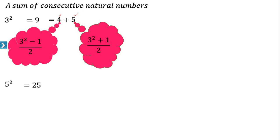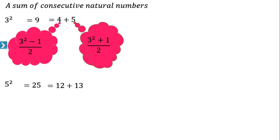Now 5² is equal to 25. How do we express 25 as the sum of two consecutive natural numbers? That is (25 − 1) / 2 and (25 + 1) / 2. So (25 + 1) / 2 is 26 / 2 = 13, and (25 − 1) / 2 is 24 / 2 = 12. So 25 is equal to 12 plus 13. Twelve is (25 − 1) / 2 and the next number is (25 + 1) / 2.